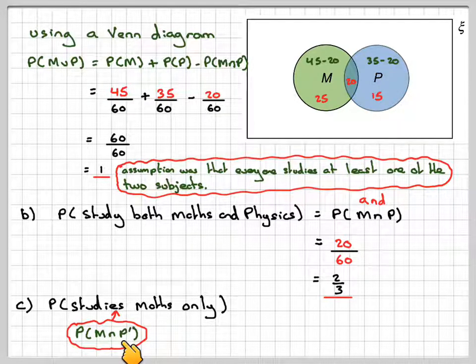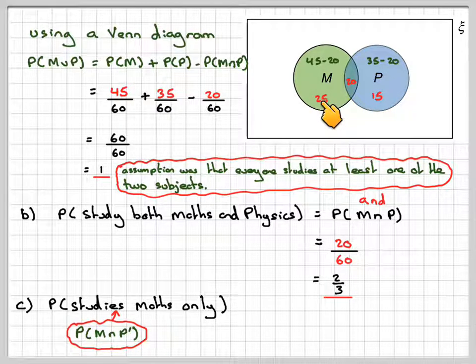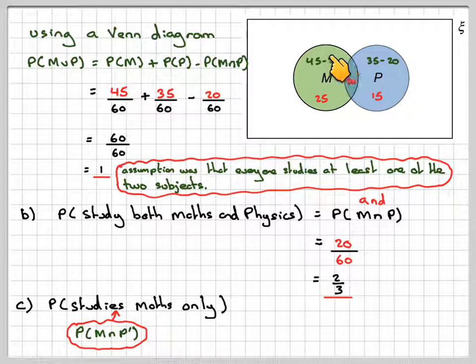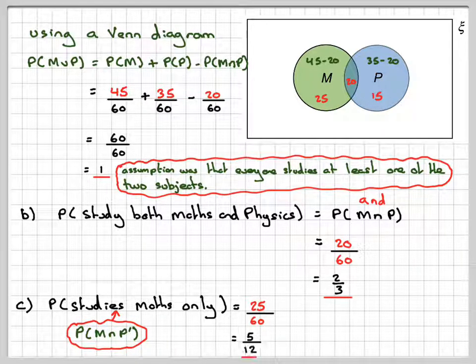If you're not sure about that, pause the video, draw a Venn diagram, shade M, and then shade not P. And the bit that's double shaded will be this bit here, where it's just 25. So it's going to be 25 over 60, which counts down to 5 out of 12.